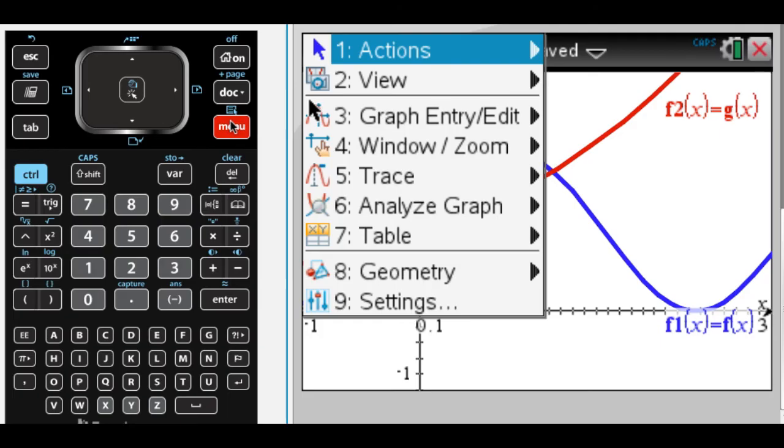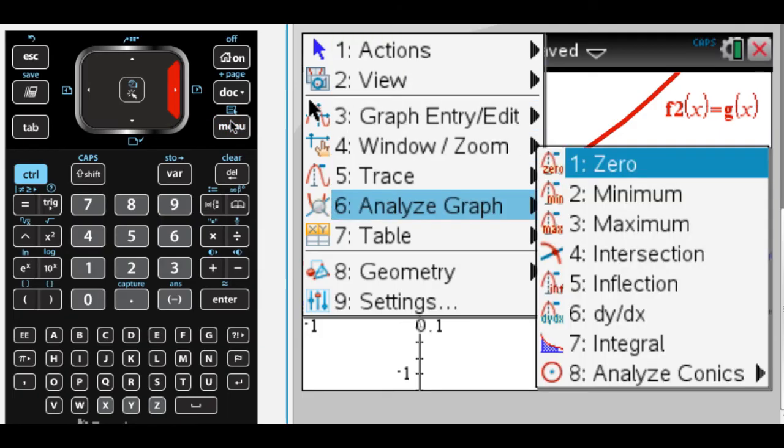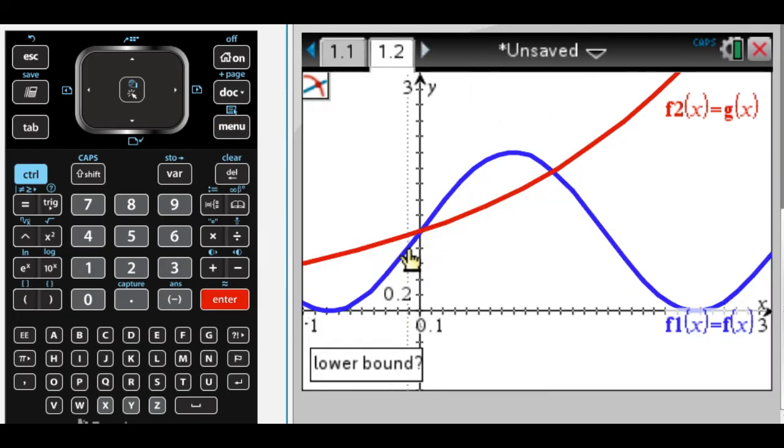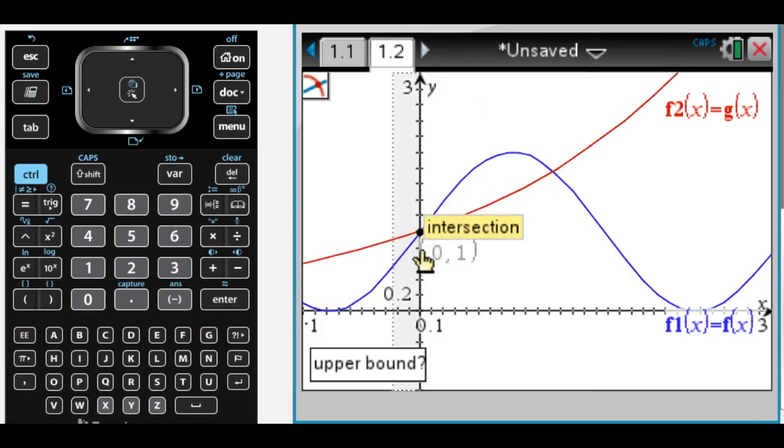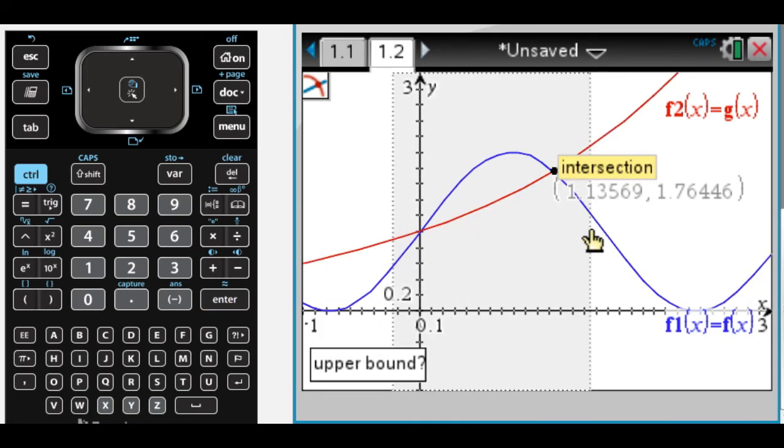So I need that intersection point. So menu, 6, and intersection. That one I can tell is at 0. Well, I mean, I guess I should find it anyway, but it's at 0. So the point that I really want is over there.